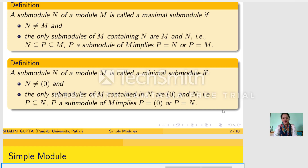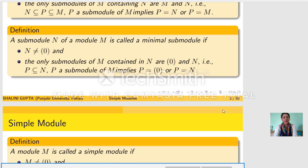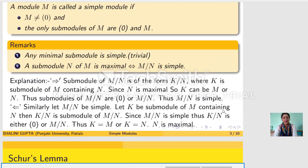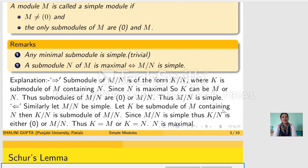Next we come to the definition of simple module. A module M is called simple if it is nonzero and the only submodules of M are 0 and M. So an R-module M is called simple if first of all it is nonzero and it has only two submodules, namely 0 and M.